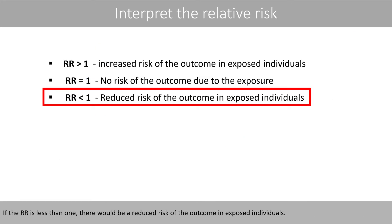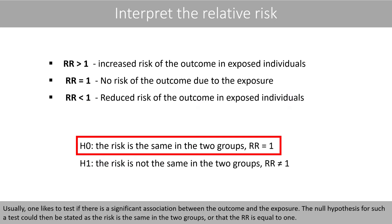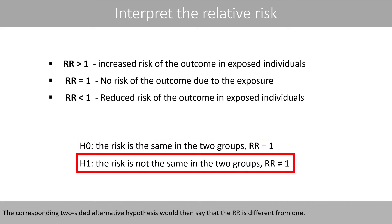If the relative risk is less than 1, there would be a reduced risk of the outcome in exposed individuals. Usually, one likes to test if there is a significant association between the outcome and the exposure. The null hypothesis for such a test could then be stated as: the risk is the same in the two groups, or that the relative risk is equal to 1. The corresponding two-sided alternative hypothesis would then say that the relative risk is different from 1.